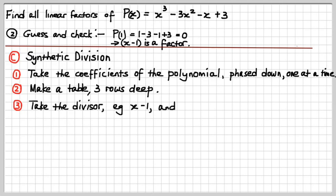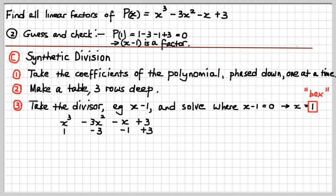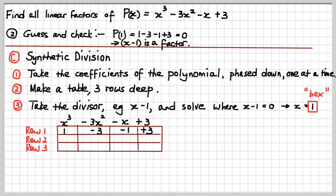Then you make a table three rows deep. And then you take the divisor, which in this case is x - 1, and you solve that equal to zero for what x would be, which means in this case it would be 1. You put that in a box, because that's our box. This is sometimes called the box technique. Now let's just go ahead and show you how you do this. Now see, there are my coefficients of the cubic, right? Now I'm going to make a three-row table now, with the first row being those coefficients, right? The first row is the coefficients. The second row is a working row. And the third row gets us the coefficients of the result of the division of that cubic by x - 1, which of course will be a quadratic.